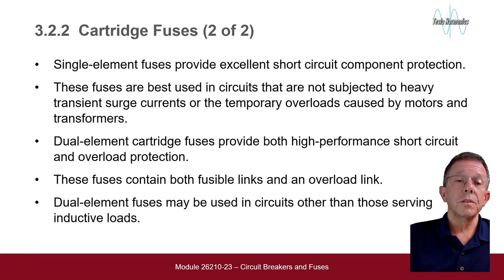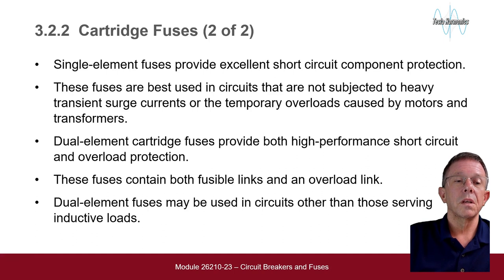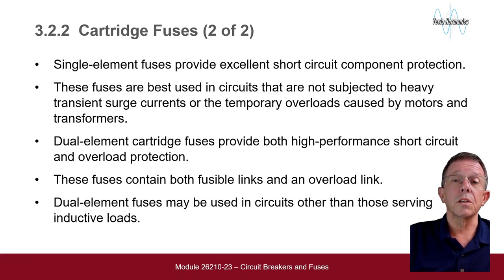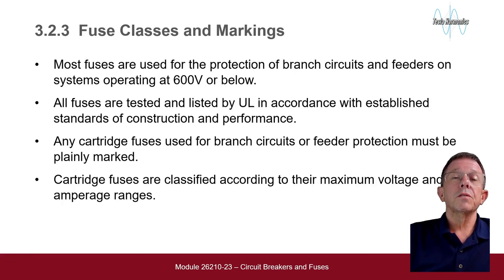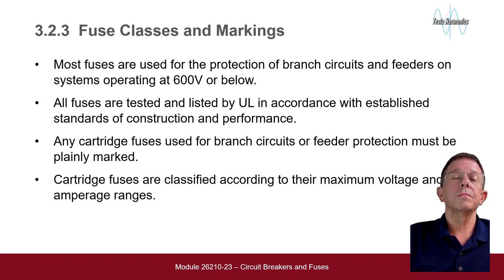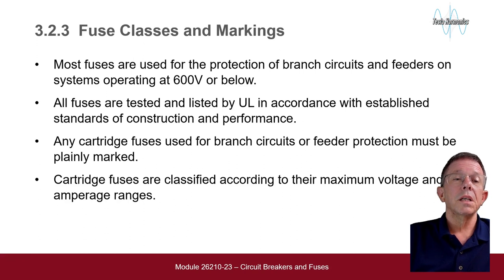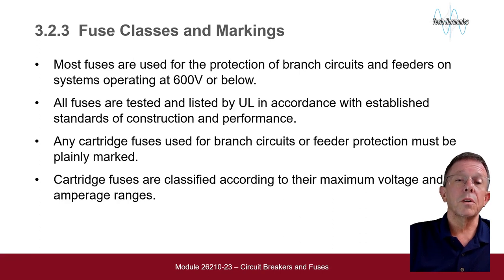Dual element cartridge fuses provide both high performance short circuit and overload protection. These fuses contain both fusible links and an overload link. Dual element fuses may be used in circuits other than those serving inductive loads. Most fuses are used for protection of branch circuits and feeders on systems operating at 600 volts or below. All fuses are tested and listed by UL in accordance with established standards of construction and performance. Any cartridge fuse for branch circuits or feeder protection must be plainly marked, and cartridge fuses are classified according to their maximum voltage and ampere rating.